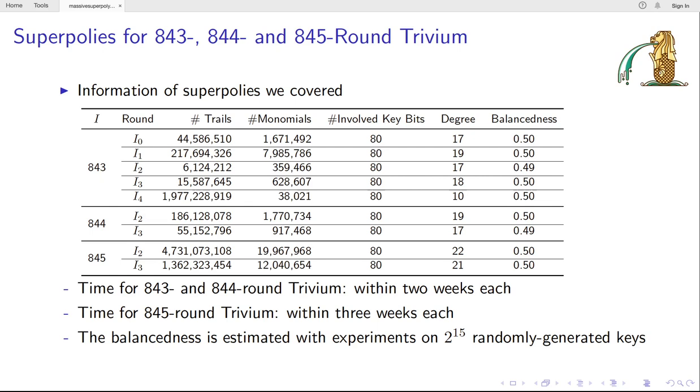The Super-Polys for 843 and 844 rounds can be recovered within two weeks, while the Super-Polys for 845 rounds are within three weeks. And their balancedness is tested by conducting 2^15 randomly chosen keys.